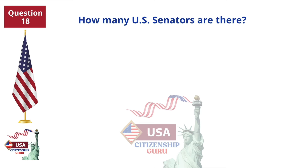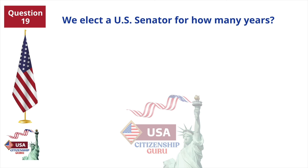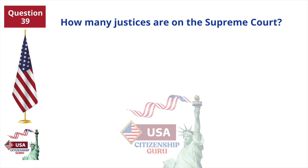How many U.S. senators are there? 100. We elect a U.S. senator for how many years? 6. How many justices are on the Supreme Court? 9.